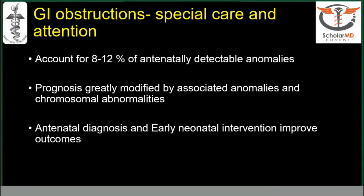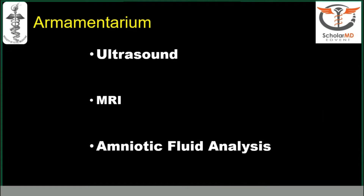GI obstructions require special care and attention. They account for 8 to 12% of antenatally detectable anomalies. The prognosis is greatly modified by associated anomalies and chromosomal abnormalities. An antenatal diagnosis and early neonatal intervention can improve outcomes. Postnatal surgical management outcomes are far better when an abnormality is detected prenatally. As far as diagnostic tools for GI obstruction, we have ultrasound and MRI is fast catching up. There is also something called amniotic fluid analysis.